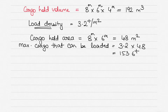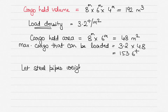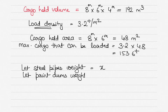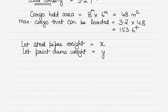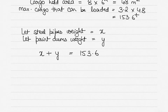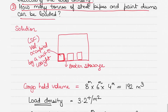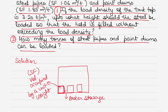We have to find the weight of paint drums and steel pipes that can be loaded. Let the weight of steel pipes be x and the weight of paint drums be y. Since the maximum load is 153.6 tons, equation one is: x + y = 153.6 tons, where x is the weight of steel pipes and y is the weight of paint drums.